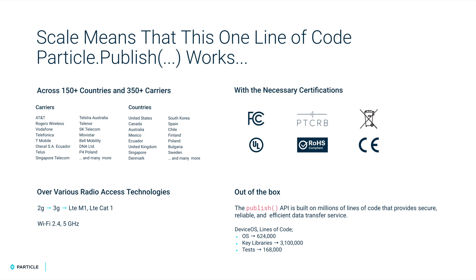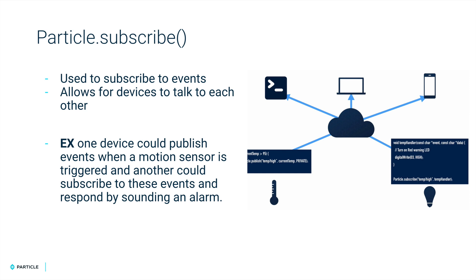The next primitive is our subscribe function. As the name states, it is used to subscribe to events — you could think of this as a way for devices to talk to each other. For example, one device could publish events when a motion sensor is triggered, and another could subscribe to these events and respond by sounding an alarm. The pub-sub architecture is powerful, allowing devices to communicate with each other through the Particle cloud.